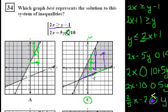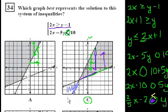You might ask why the other region doesn't work. That area is above our first line — it's where y is greater than 2x plus 1 — and it's actually below our second line, so it represents the opposite area. The answer is C.